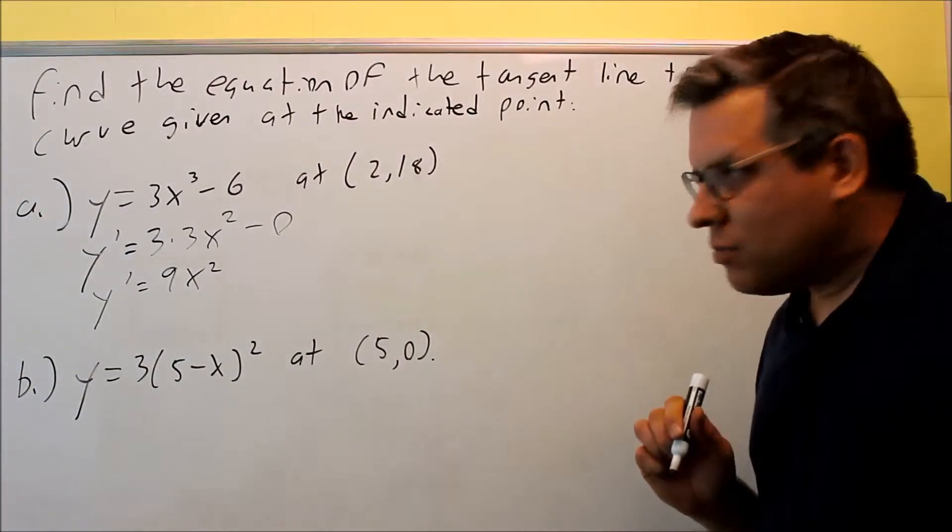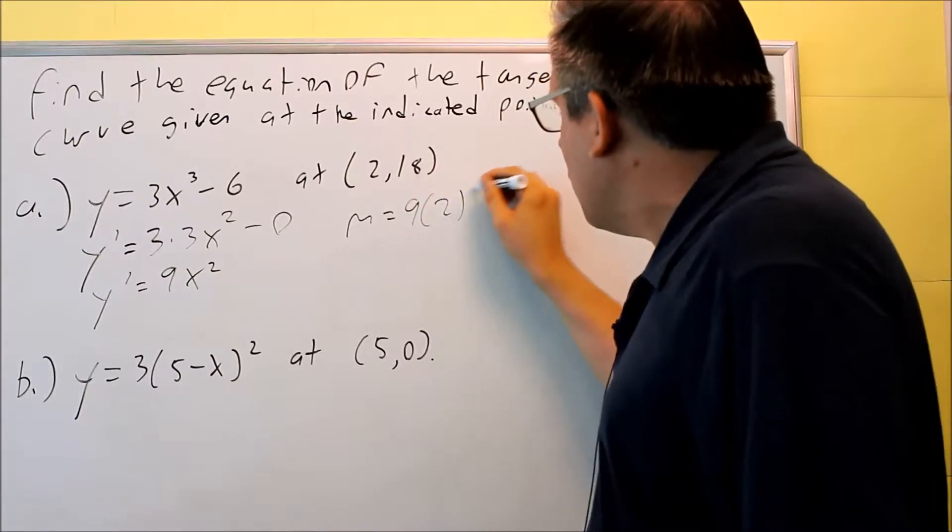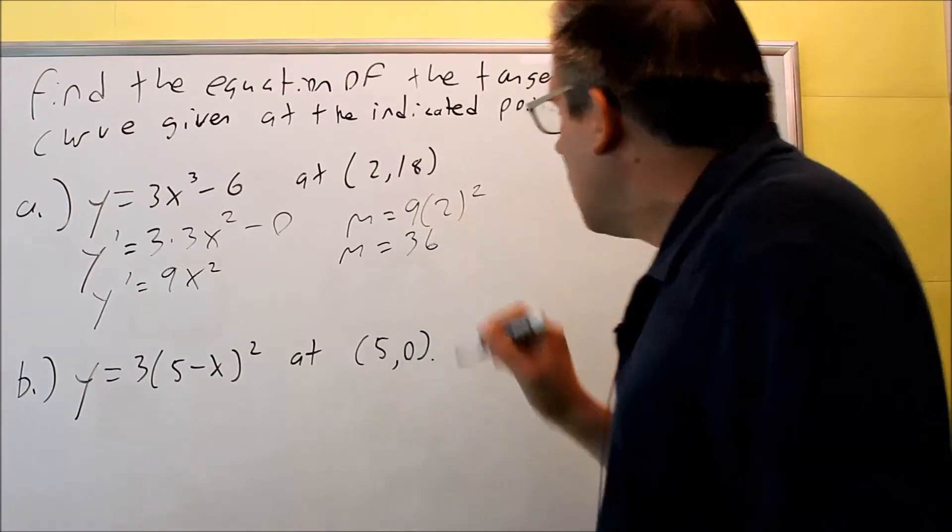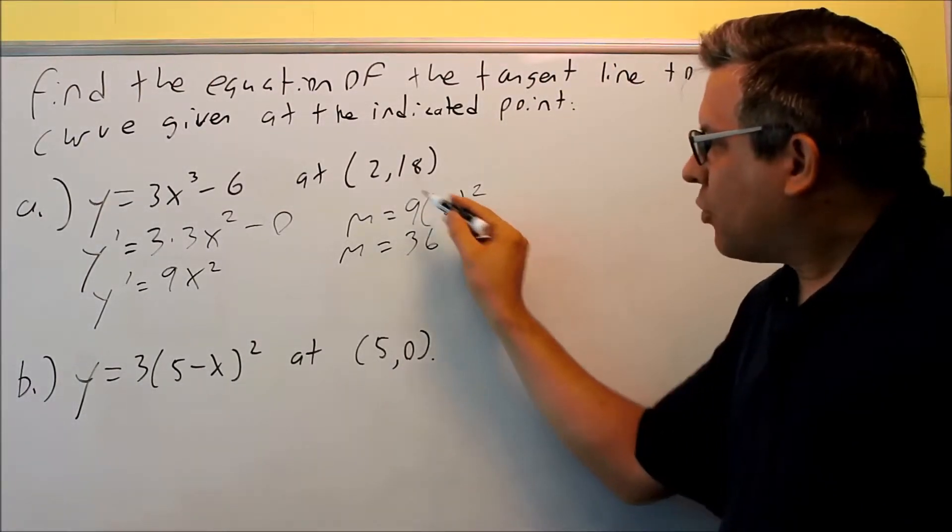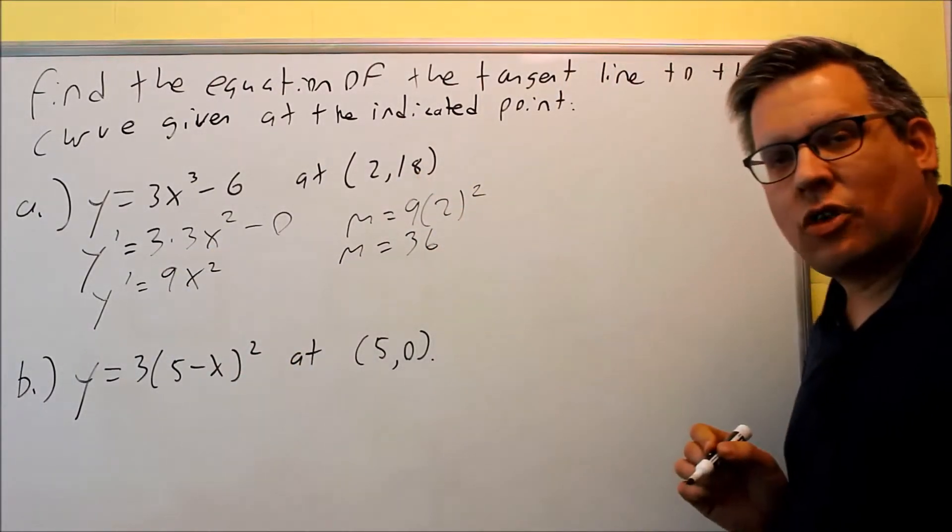To find the slope, my m is going to be nine times two squared, so my slope is going to be 36. So again, we found the m by putting two into our derivative formula. That will give us the slope.